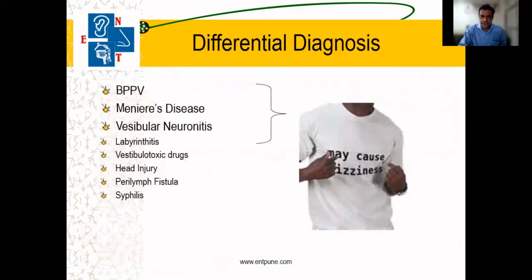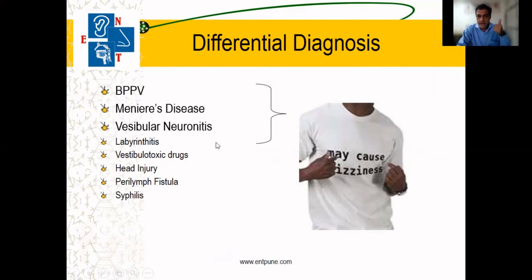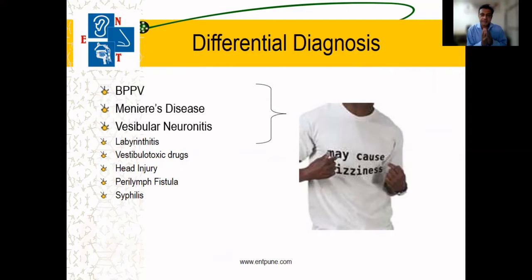The most important differential diagnoses for peripheral causes are three conditions: BPPV, Meniere's disease, and vestibular neuritis. There are other causes also, but these three are the most important, and the majority of patients will fit into one of these three diagnoses.